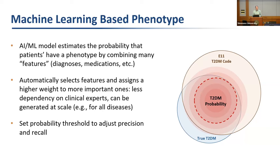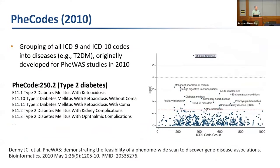Rather than saying 'these are the patients with diabetes,' it assigns a probability, and you set your threshold to balance precision and recall. To give background on the innovations leading up to how we implement this in i2b2: starting around 2010, fee codes were developed for GWAS studies, grouping ICD-9 codes into clusters that represent a disease. This has been extended to ICD-10, rolling all relevant codes up to a higher-level grouping like type 2 diabetes.